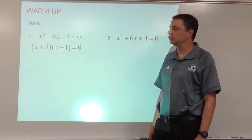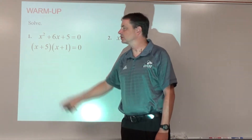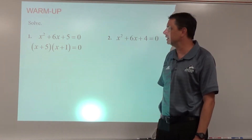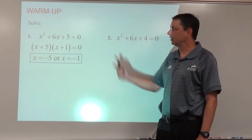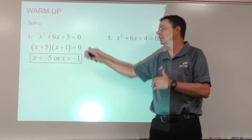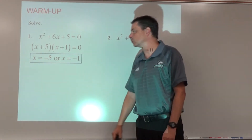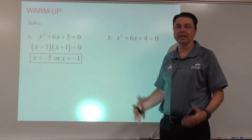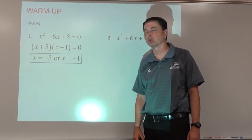Then we use the zero product property to split it into two equations: x + 5 = 0 and x + 1 = 0. Solving both of those, x = -5 or x = -1. The order is not important.